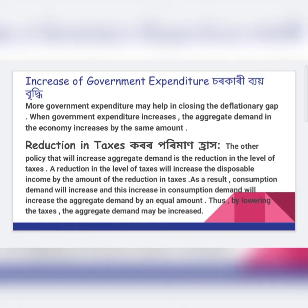If the government reduces its existing tax rate, it will increase disposable income as well as reduce the price level of commodities. Since consumption is determined by disposable income, when disposable income increases and price decreases, consumers will purchase more goods, demand will rise, aggregate demand goes up, and deficient demand will be corrected. Through reduction in taxes, the government can correct deficient demand of an economy.